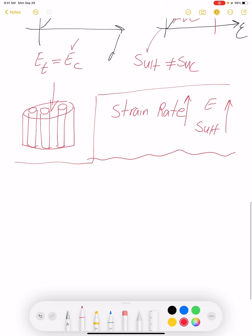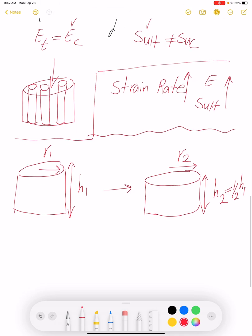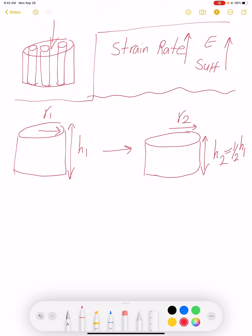The other important thing to note is the dimension of our specimens after testing. Let's say this is our slug. We have an initial radius of r1 and height h1. Then after testing we're going to get a different height and different radius. We know the height - we put our criterion as h2 would be half of h1. So we are going to deform our specimens until h2 reaches half of h1.